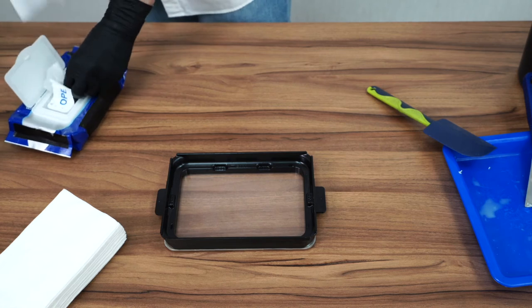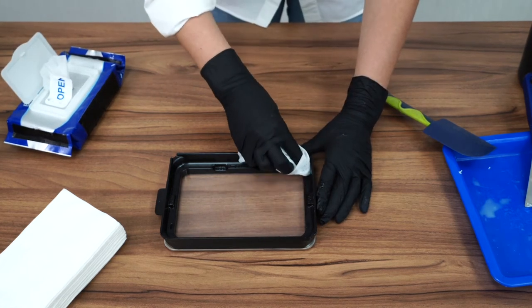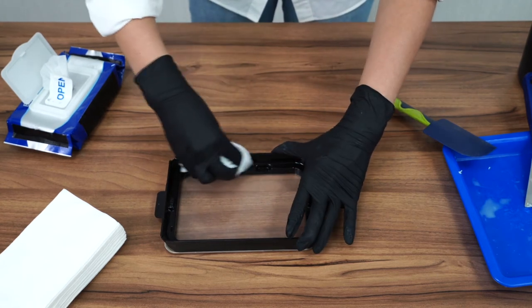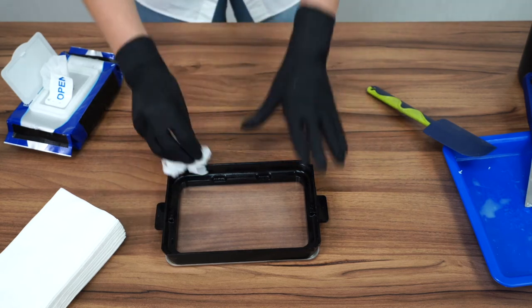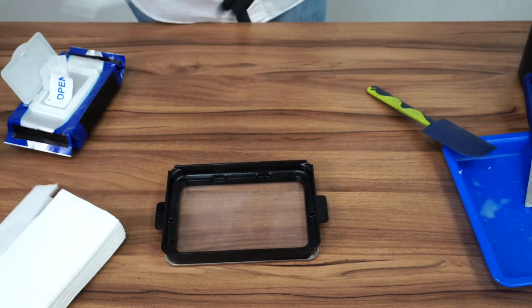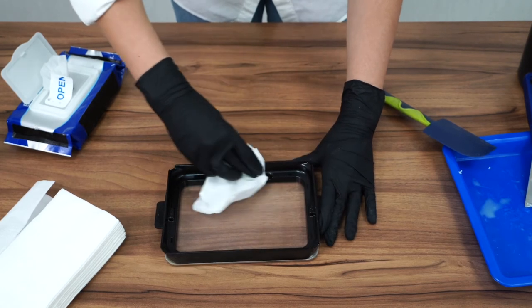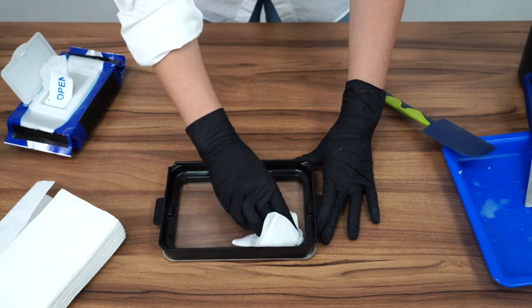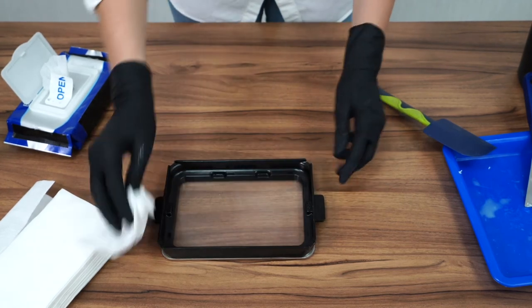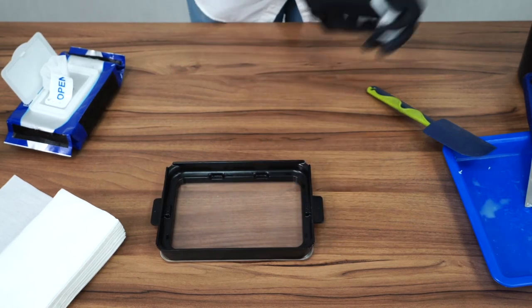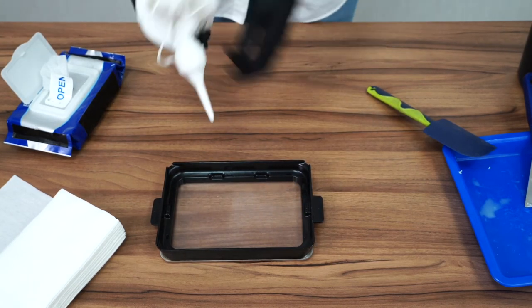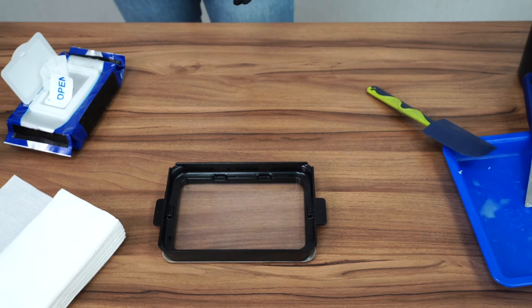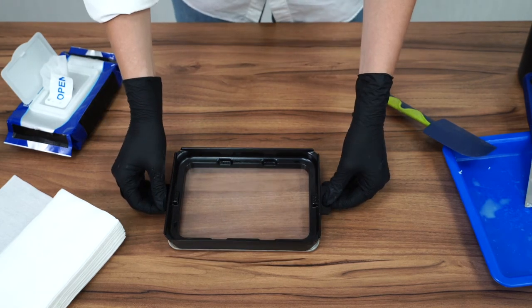So again, we're going to take an alcohol wipe and just go over those little parts again where you see some residue resin here. Okay. Then again, dry tissue. And one more quick round with the air blower. And you're finished. You have a perfectly clean vat.